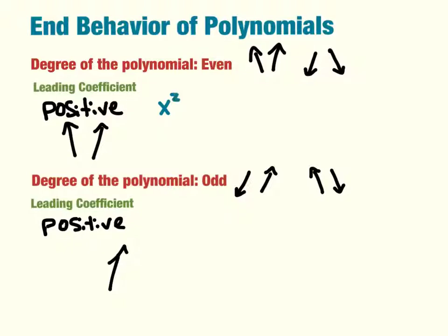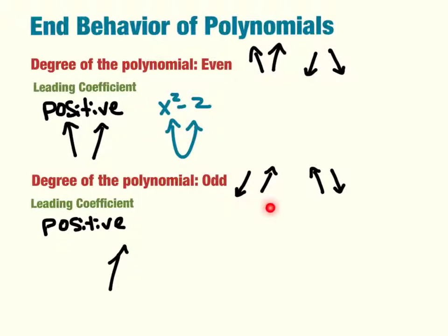We saw that a second ago: whenever it was x squared minus 2, we have an even degree with a positive 1x squared, so the end behavior of this graph was up and up. Looking at the odd case: the positive told me that it ended going up, but because it's odd I know they have to go in opposite directions. So if we have a positive leading coefficient, it will go down then up. We saw that with x cubed plus 1 — an odd degree with a positive x cubed, and this graph looks like this.